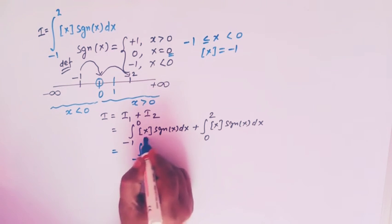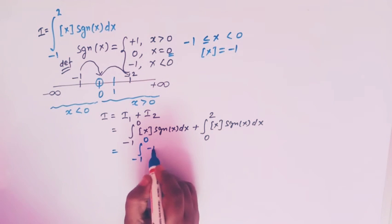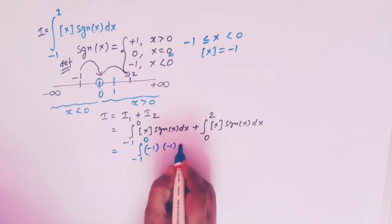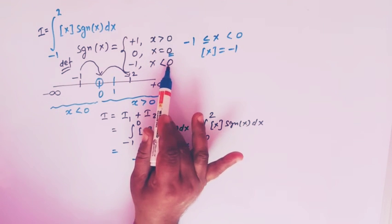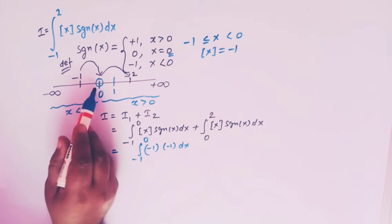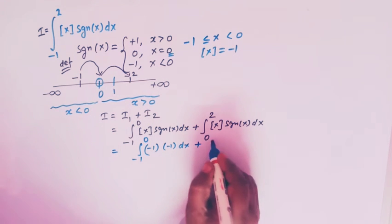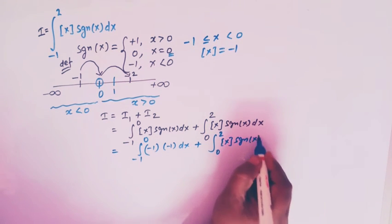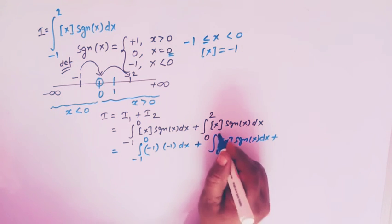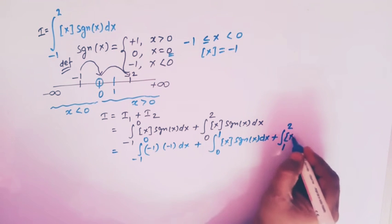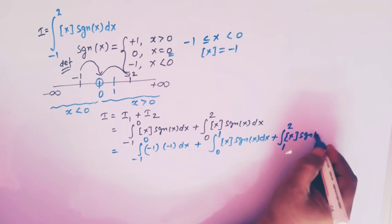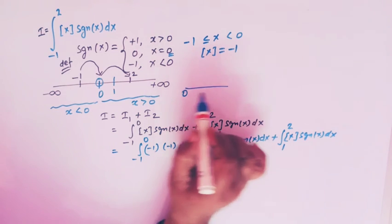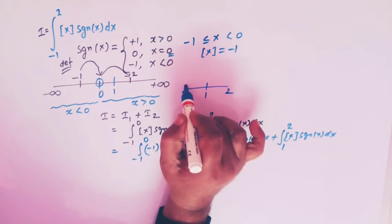For the interval minus one to zero, the greatest integer of x is minus one and signum of x is also minus one, since x is less than zero throughout that interval. The integral from zero to two is split into zero to one, and one to two, of the greatest integer of x times signum of x dx.